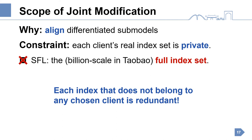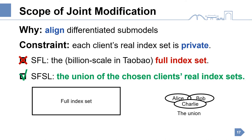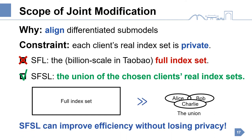Therefore, we can deduce that each index that does not belong to any chosen client is redundant. Based on this observation, our SFSL tends to using the union of the chosen clients' real index sets, which is necessary and sufficient. Because the union is far smaller than the full index set, our design can improve efficiency without losing privacy. Also, the union is independent of the full index set, so our SFSL can relieve the dependency on the full model.